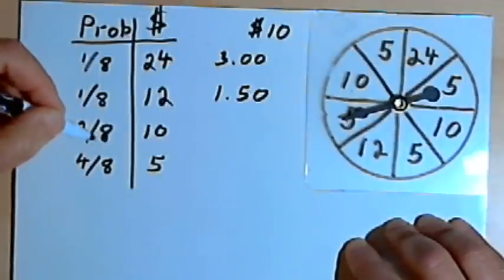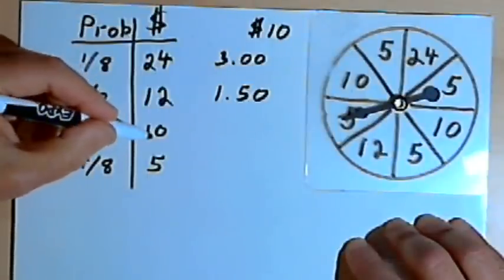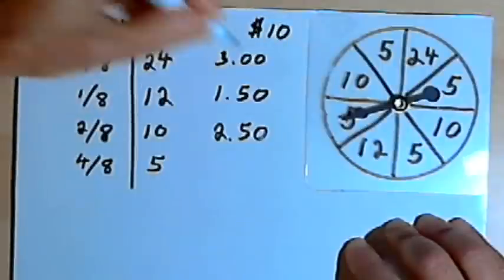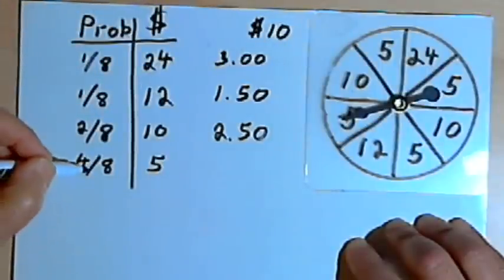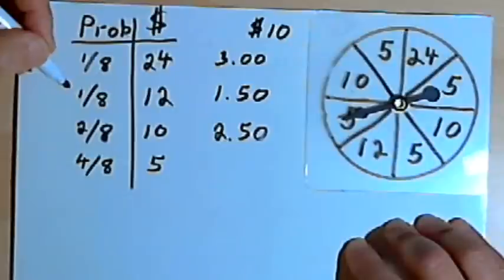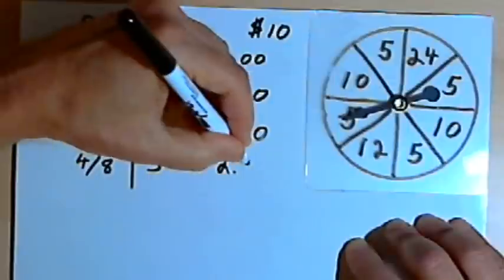Two-eighths of the time, or one-quarter, you get back 10 dollars. And one-quarter of 10 dollars is two-fifty. And four-eighths of the time, or one-half, you get back five dollars and half of five dollars is also two-fifty.